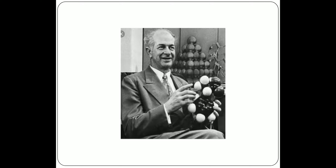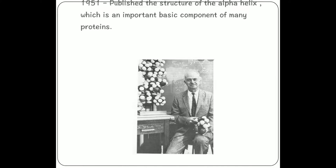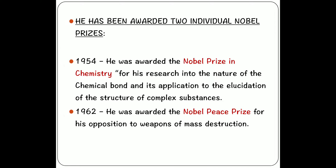This is the reason why we are learning about Linus Pauling in the chapter of chemical bonding, because he worked across a broad range within the field of chemistry. He also worked on the structure of biologically important chemical compounds. Interestingly, in 1951 he published the structure of the alpha helix, which is an important basic component of many proteins. The alpha helix also acted as a background for the model of Watson and Crick. That is how in 1954 Linus Pauling was awarded the Nobel Prize in Chemistry for his research into the nature of the chemical bond and its application to the elucidation of the structure of complex substances.